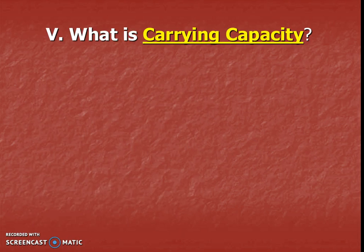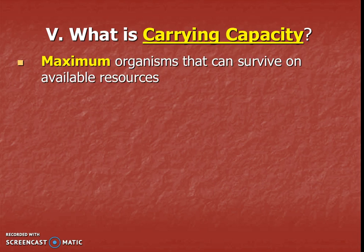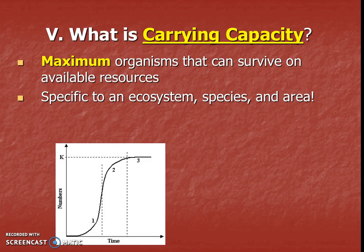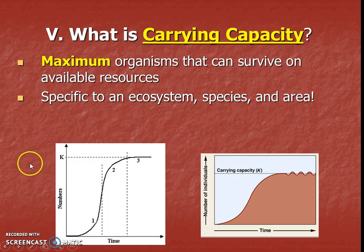We do have a vocab word for that flat area on the graph, and it's called carrying capacity. Carrying capacity is defined as the maximum number of organisms that can survive on available resources. It's specific to an ecosystem and the exact species in an area. For example, the carrying capacity for deer in Lehigh Park is different than the carrying capacity for squirrels in Lehigh Park. Carrying capacity is the flat part of the graph — it is where the amount of organisms finally levels out.